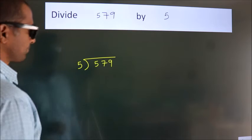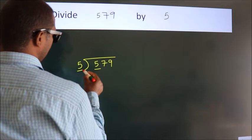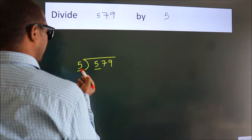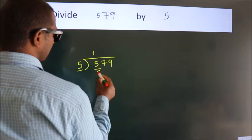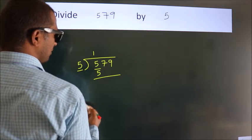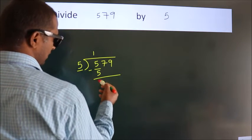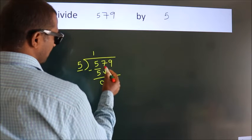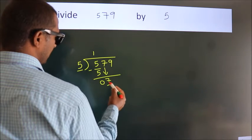Next, here we have 5. When do we get 5 in the 5 table? 5 once is 5. Now we should subtract — we get 0. After this, bring down the beside number. So 7 comes down.